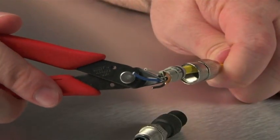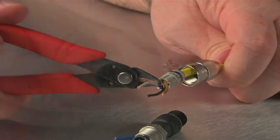Trim the conductors flush with the top of the contact carrier. No need to strip the wires.